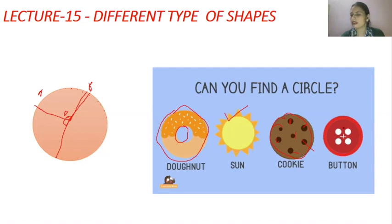This is a button in the shape of a circle. You can count one circle, two, three, and four. This is also a circle.